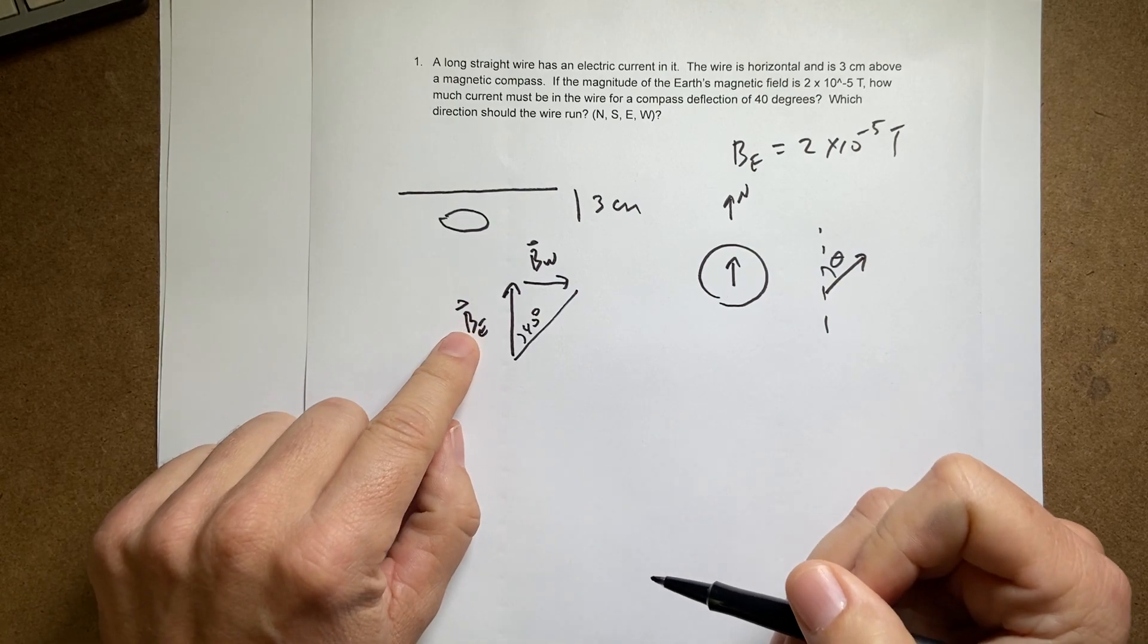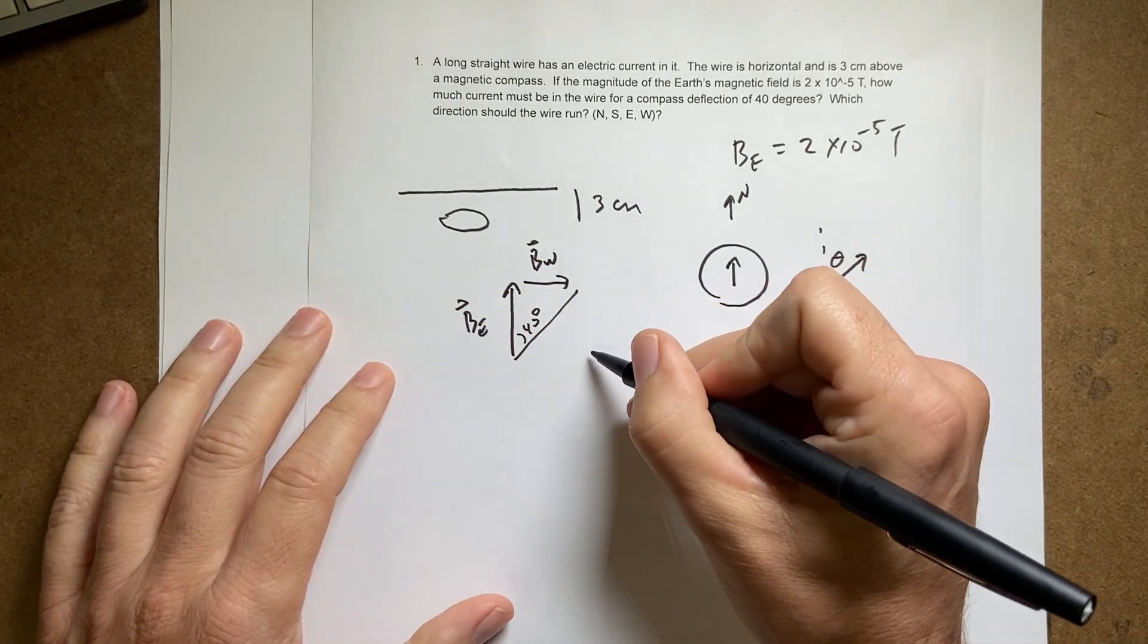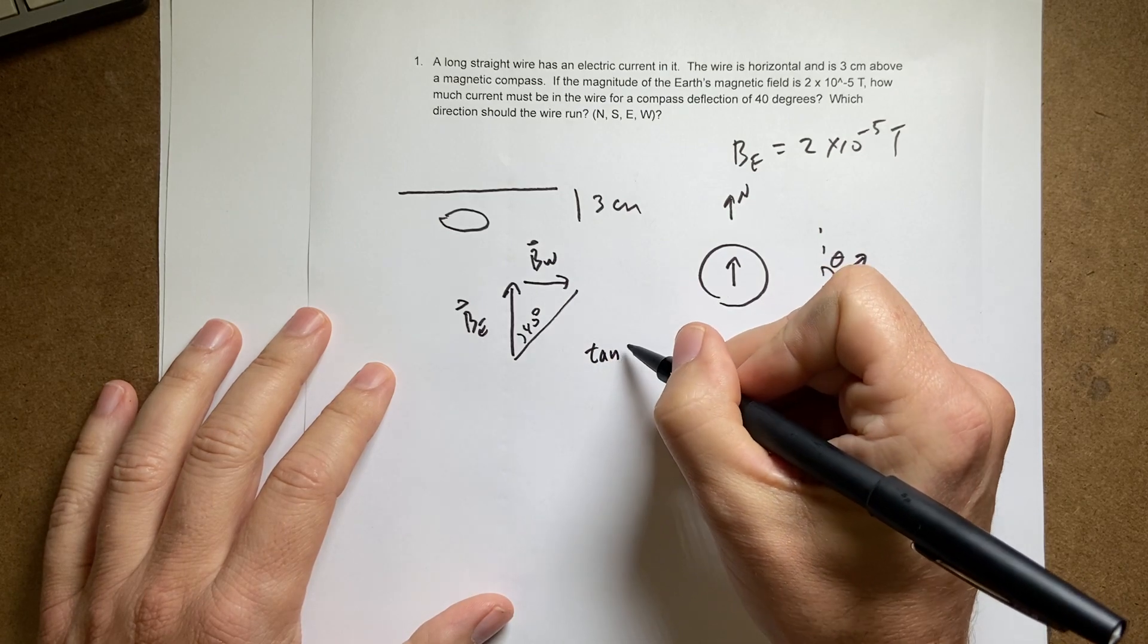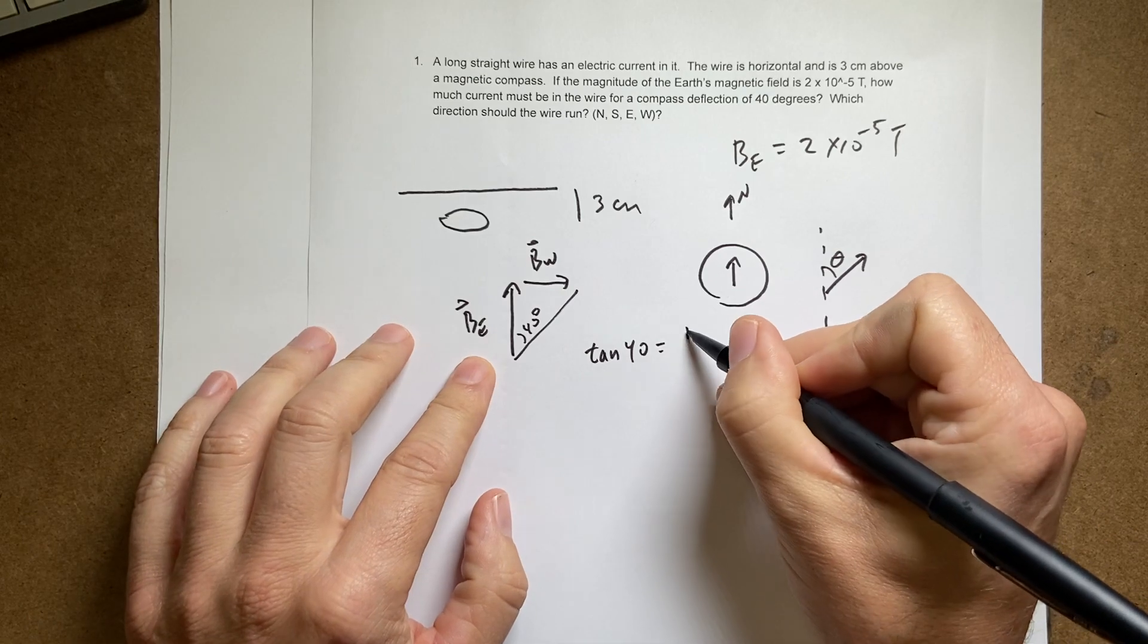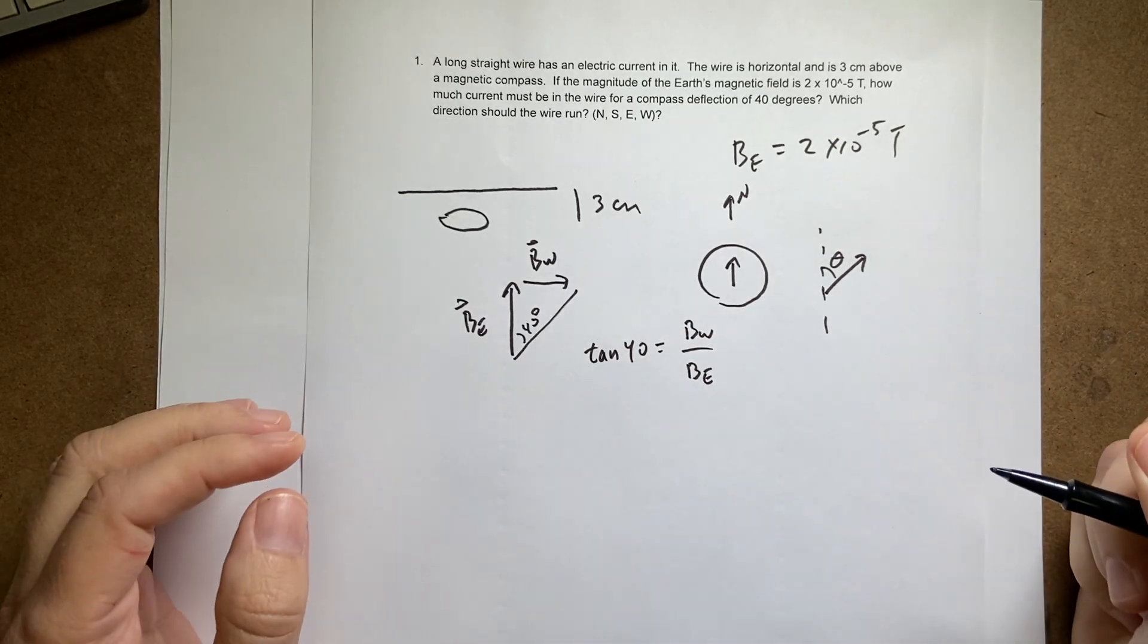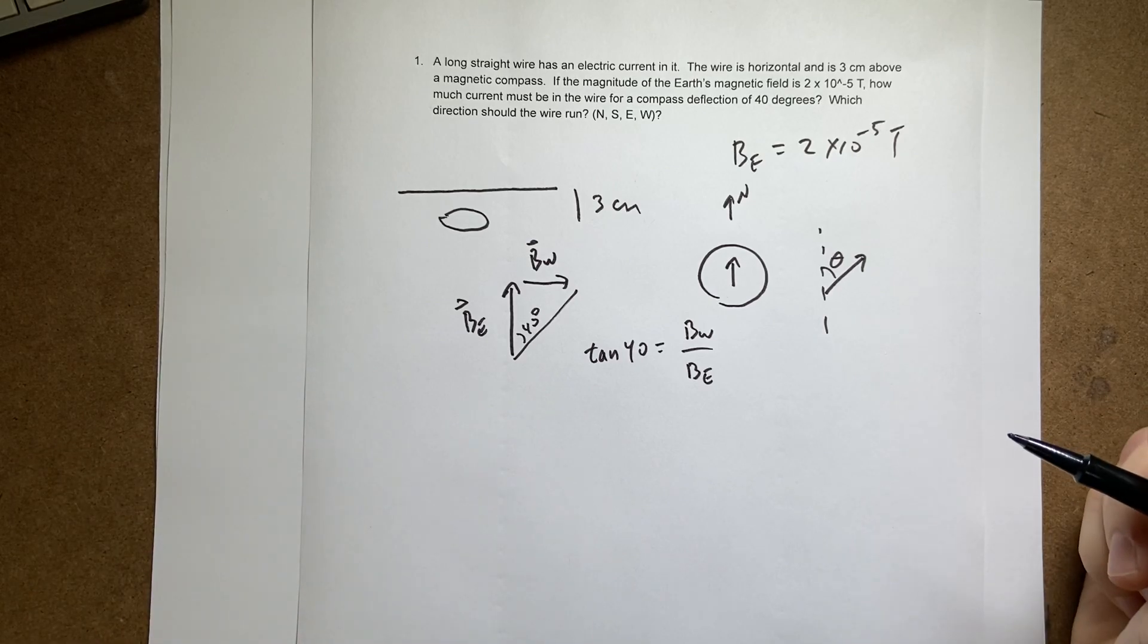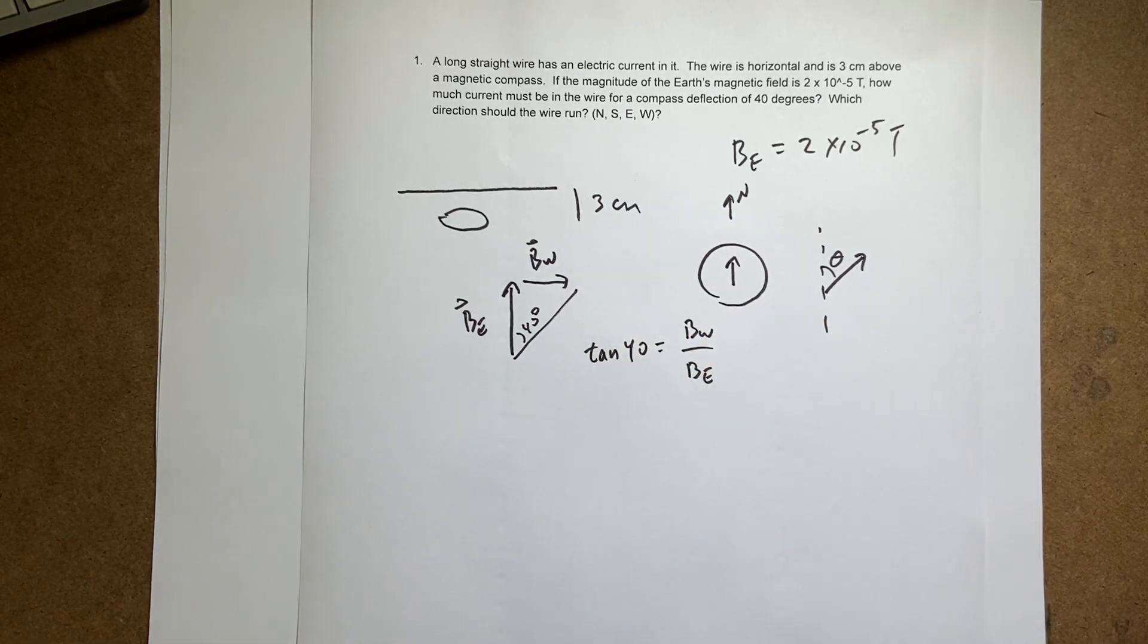So if I know the value of B E, I know this component right here. Then I could say the tangent of 40 equals adjacent, opposite over adjacent. So it's the magnitude of the wire divided by the magnitude of the Earth's magnetic field. And that should be true. And then I can find the magnitude of the wire's magnetic field. And then I know the distance. I can use that.